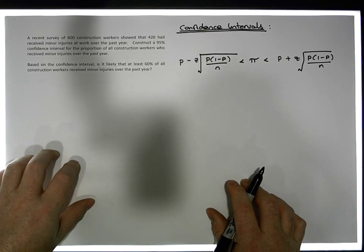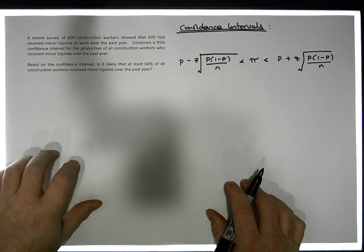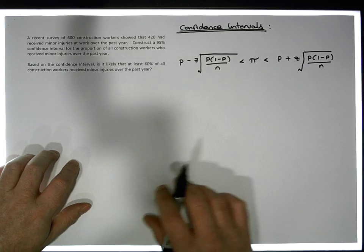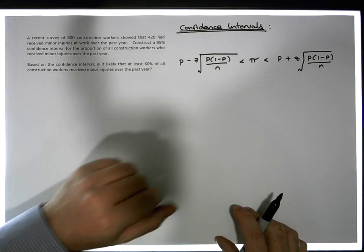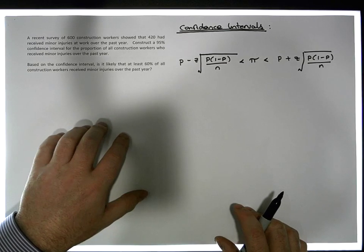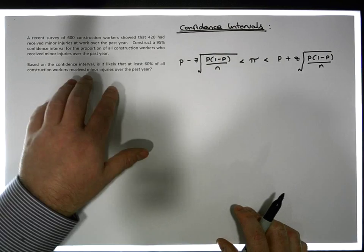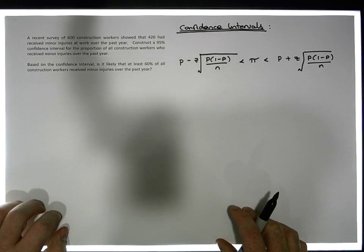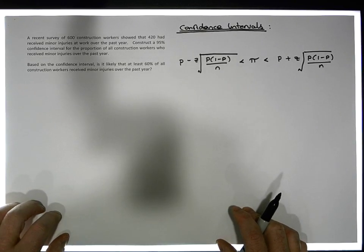Hi guys, this is Jonathan Lambert with the Mathematics Development and Support Service at the National College of Ireland. This short video, another in our series dealing with hypothesis testing and more importantly confidence intervals, is a scenario asking us to construct a confidence interval for a single population proportion.